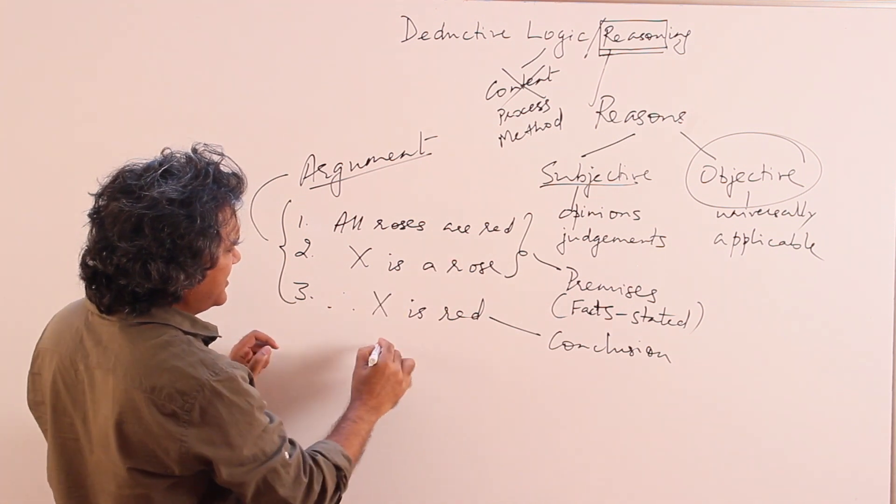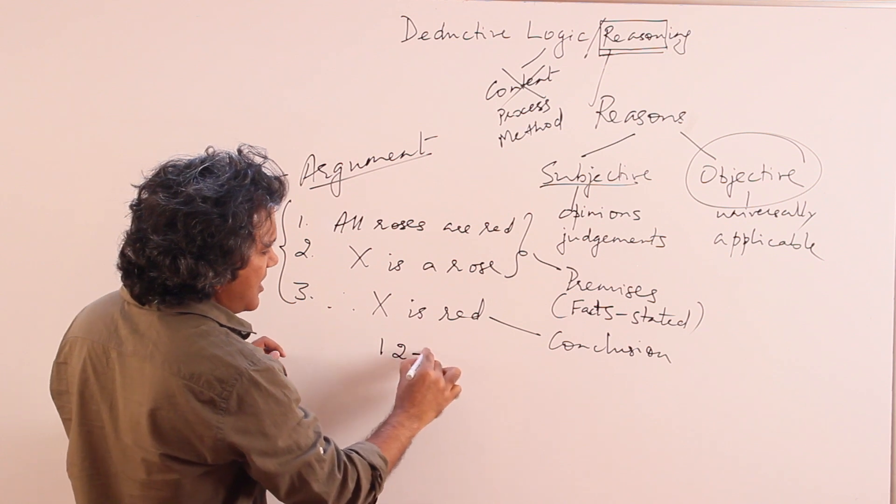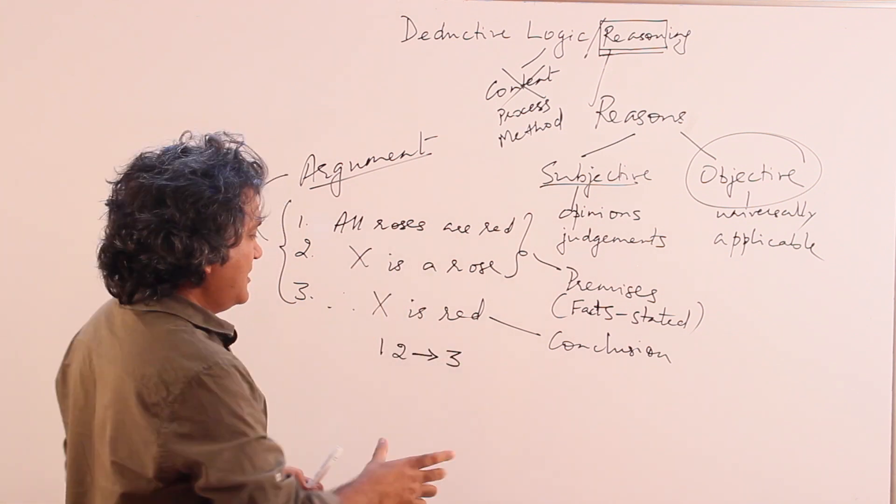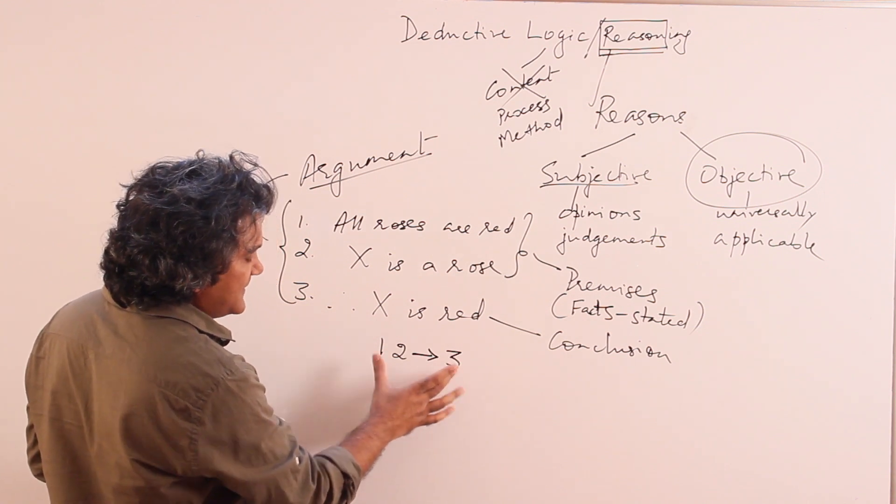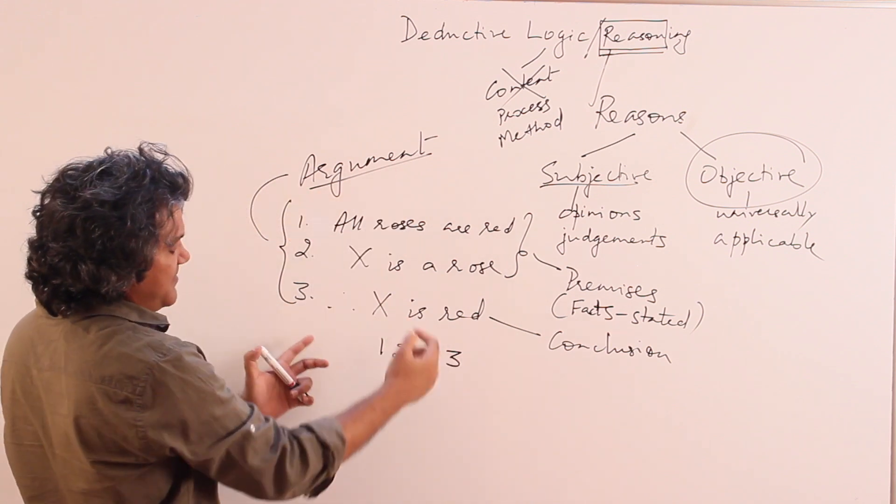So now what is going on here is 1, 2 as the premises are leading to the conclusion 3. This is the method. This is the process used. And this particular - so this is an argument if you remember.